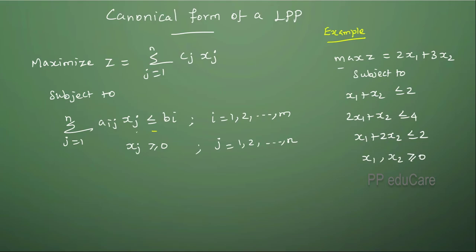The objective function should be of maximization type and all the constraints other than non-negativity constraints should be of less than or equal to type. If it is so, then we can say that the linear programming problem is in canonical form.